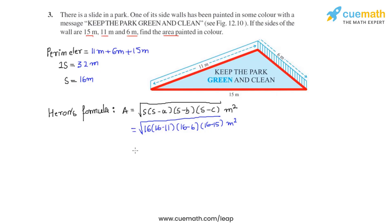On further calculation, this gives us the area which is painted in color to be equal to 20 root 2 meter square. And that is the answer for this question.